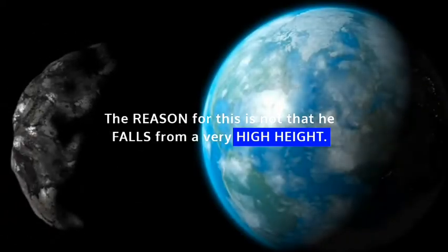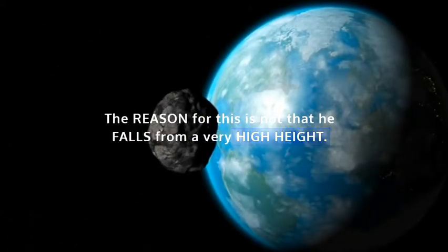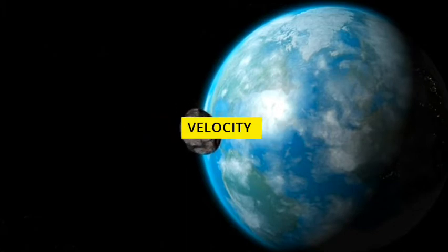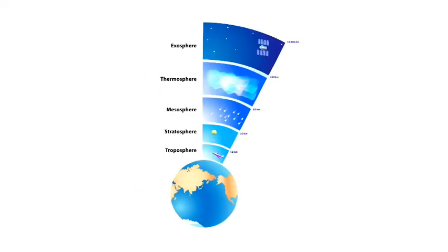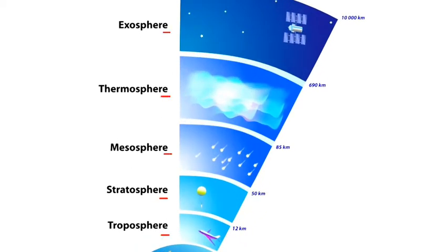Any asteroid after coming into the Earth's atmosphere is completely destroyed by burning. The reason for this is not that it falls from a very high height—the science behind this is velocity, compression, and speed. Let us understand it more easily. There are mainly five layers of the Earth's atmosphere.